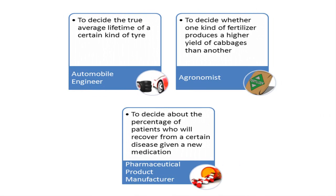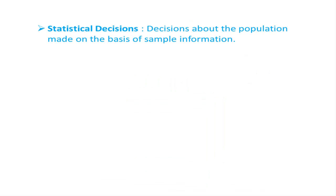Instead of testing every item in the lot, the automobile engineer, the agronomist, or the pharmaceutical product manufacturer may test only a few items chosen at random from the lot, and then make decisions about the population parameters — like the average lifetime of a tire, the average yield of cabbages produced by fertilizer one and fertilizer two, or the probability of recovery of patients using the given medication. These kinds of decisions made about the population on the basis of sample information are called statistical decisions.